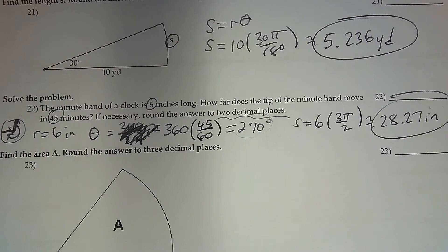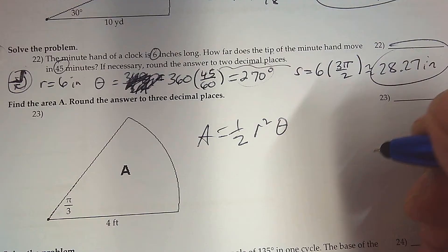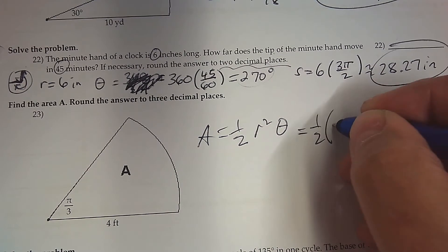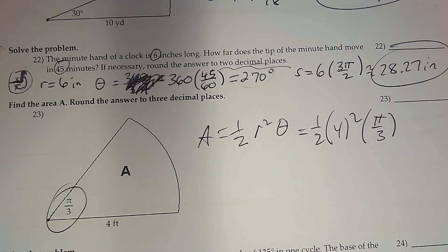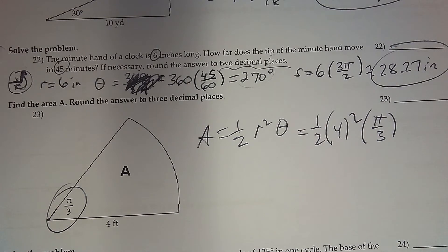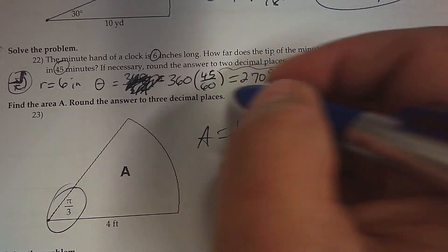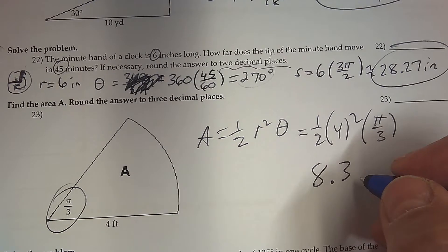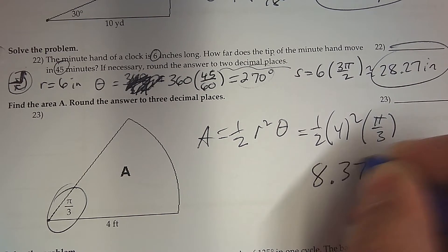How about sector area? The formula is one half r squared theta. In this example, the radius is 4 and the angle is already in radians, so it's perfect. Type that in: 0.5 times 4 squared times pi divided by 3. You get the answer 8.378, and that's in feet squared.